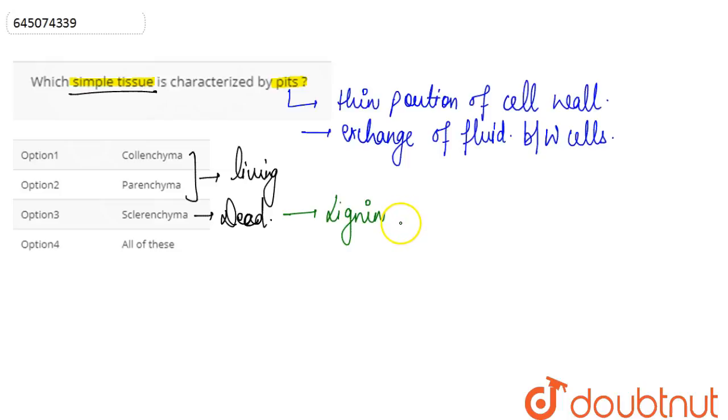Like the sclerenchyma, tracheids, and vessels. So pits are basically found in the sclerenchyma tracheids and vessels of the xylem. Tracheids and vessels are basically the xylary elements, which is a complex permanent tissue. As per the options, we can say that it is the sclerenchyma.